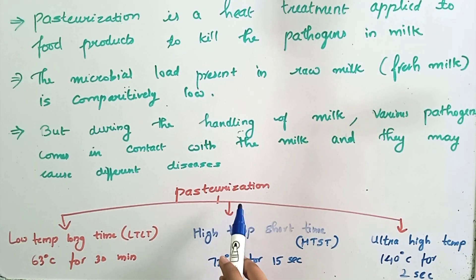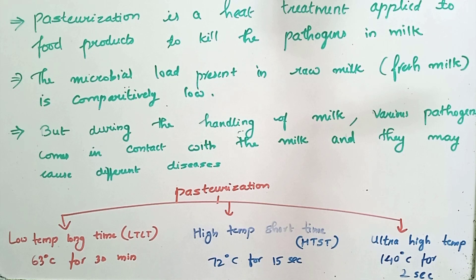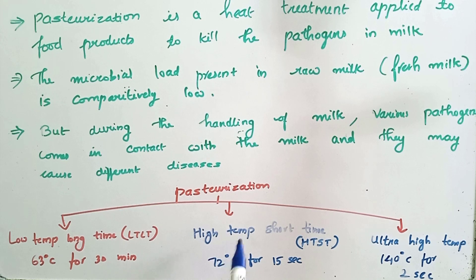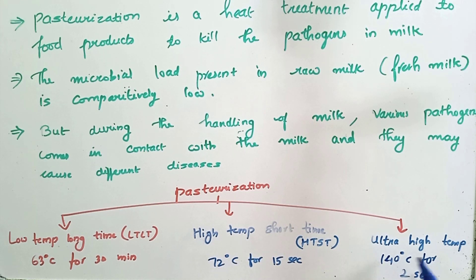There are mainly three different methods for doing pasteurization. The first one is Low Temperature Long Time pasteurization, the second one is High Temperature Short Time pasteurization, and the third one is Ultra High Temperature pasteurization.